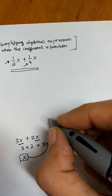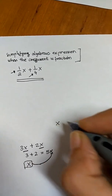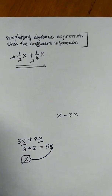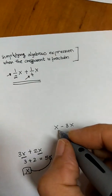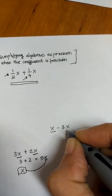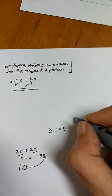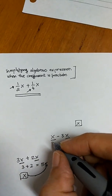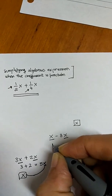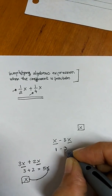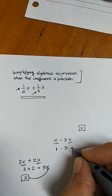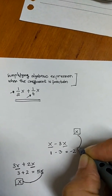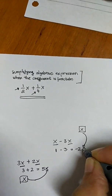One more example: x minus 3x. Both are like terms because the variables are the same. So I store x in the safety box. That means we have 1 minus 3, which equals minus 2. Return the variable from the safety box: the answer is minus 2x.